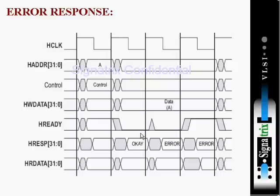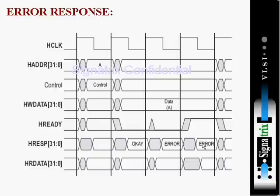In order to decide whether it is an error, retry, or split response, the slave takes one extra cycle — this is called a wait cycle, with the ready signal low. That wait state is used for the slave to take this decision. Since error response is a two-cycle response, it takes two cycles here to tell the master that it is an error response.